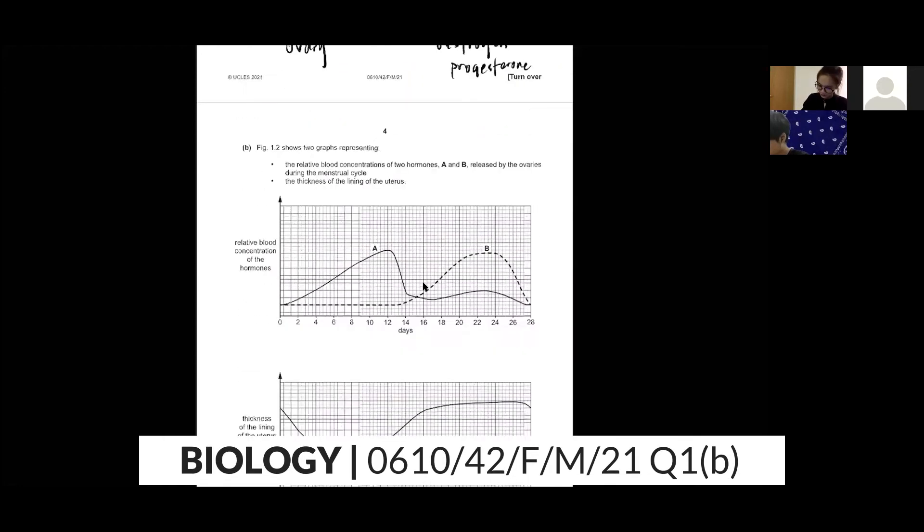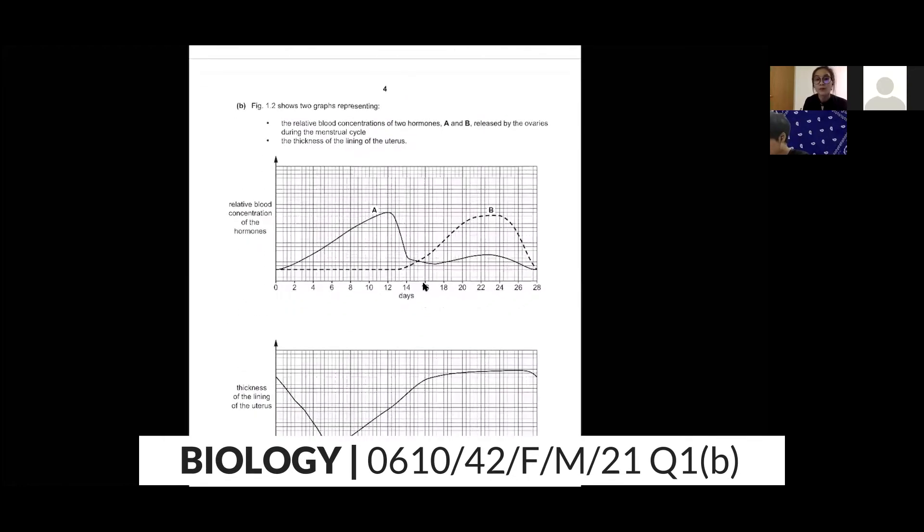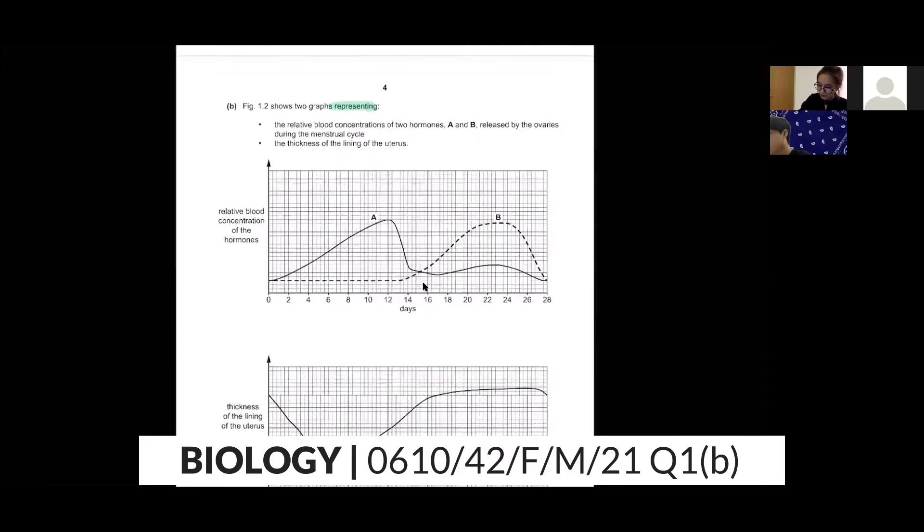Next question: Figure 1.2 shows two graphs representing the relative blood concentration of two hormones A and B released by the ovaries during the menstrual cycle. I already mentioned to you, so what are the two hormones released by ovaries?